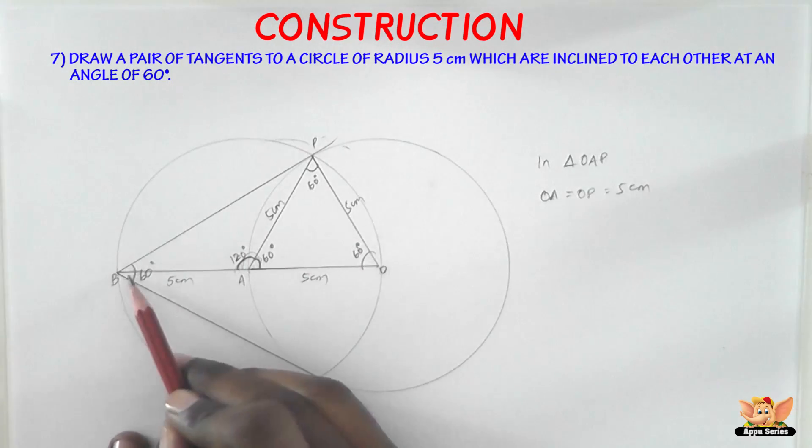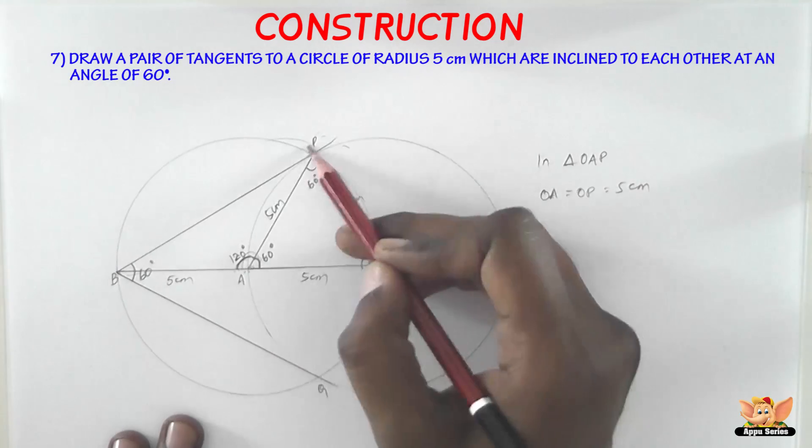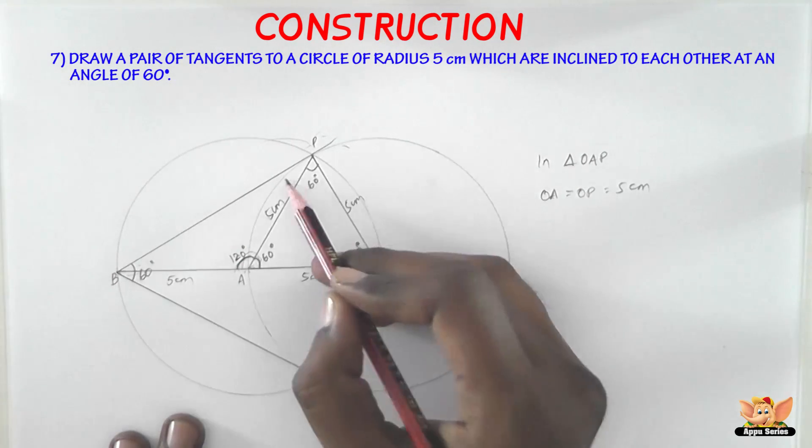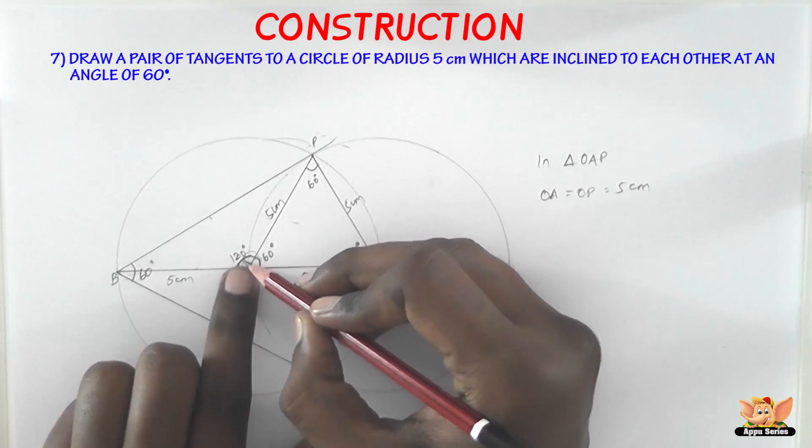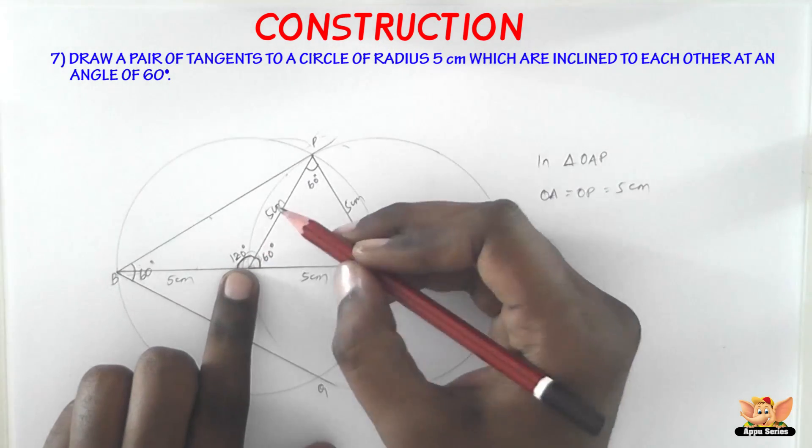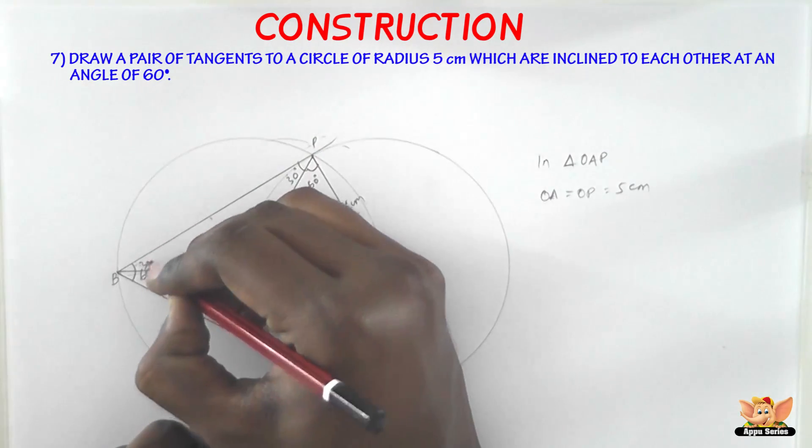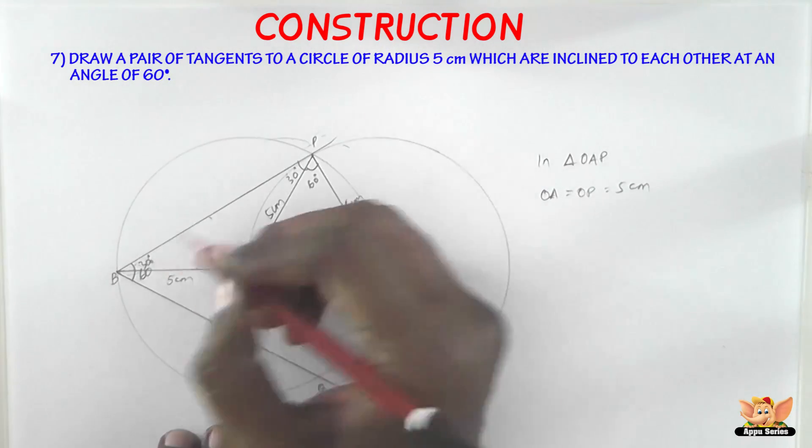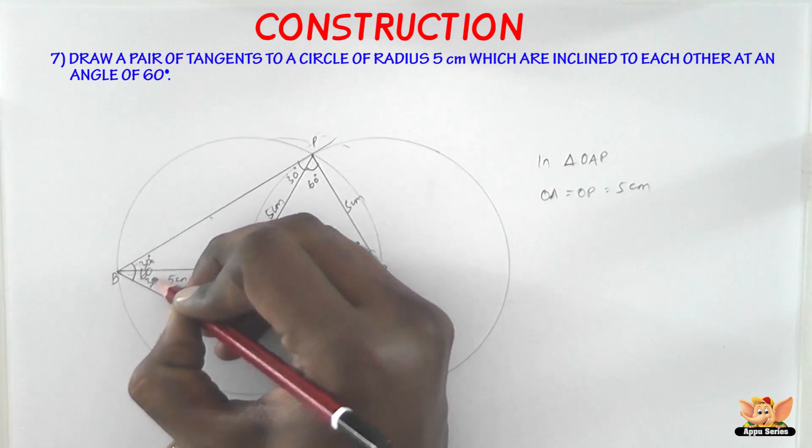So now we have BA equals 5 centimeters and AP equals 5 centimeters. That makes APB an isosceles triangle. So if that makes APB an isosceles triangle, then these two angles, that is the angles opposite to equal sides, are equal. So if this is 120, the remaining angle should be 60 degrees. 180 minus 120 is 60. 60 split equally between this and this gives you 30 here and 30 here. So this will be 30. So 30 plus 30 makes 60 degrees.